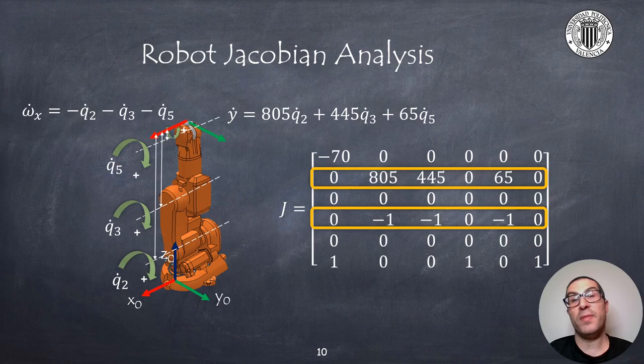Similarly, we can observe that joints 2, 3 and 5 contribute in this case to the linear velocity in the y coordinate and also in the angular velocity in the x coordinate as you can see. This is showing that the linear velocity component is also more sensitive to variations of joint 2 compared to variations of joint 5.